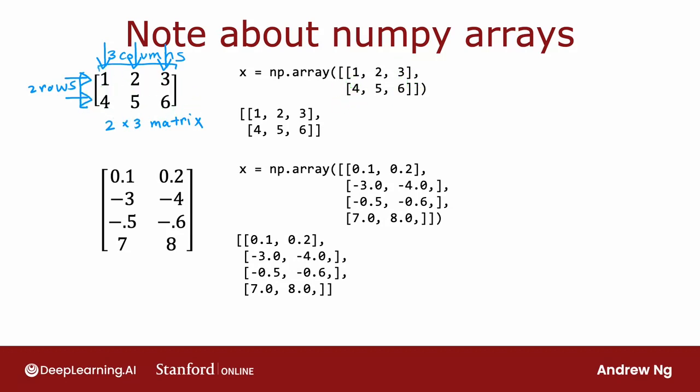And four, five, six is the second row of this matrix. And then this opposite square bracket groups the first and the second row together. So this sets x to be this 2D array of numbers. So a matrix is just a 2D array of numbers.